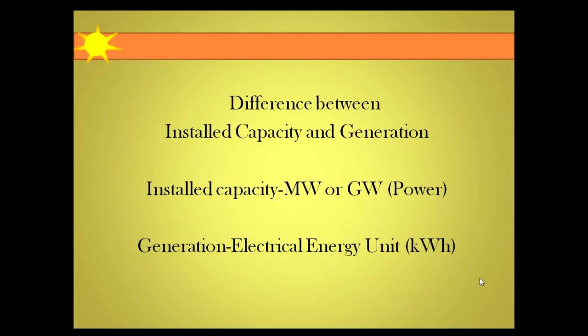Higher units like terawatt also exist, but most commonly megawatt and gigawatt are used. A gigawatt is equivalent to 1000 megawatt. Generation is expressed in electrical energy — its unit is kilowatt-hour. Generation is obtained by multiplying power by the time duration during which the power plant has been running.